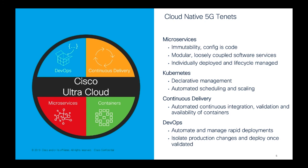Cisco Ultra Cloud contains four pillars: microservices, containers, DevOps, and continuous delivery. Microservices are decoupled software services, individually deployed and lifecycle-managed. Kubernetes is the orchestrator for automation, scheduling, and scaling. Continuous delivery provides automated integration, validation, and availability. DevOps automates rapid deployment, isolates production changes, and deploys once validated.